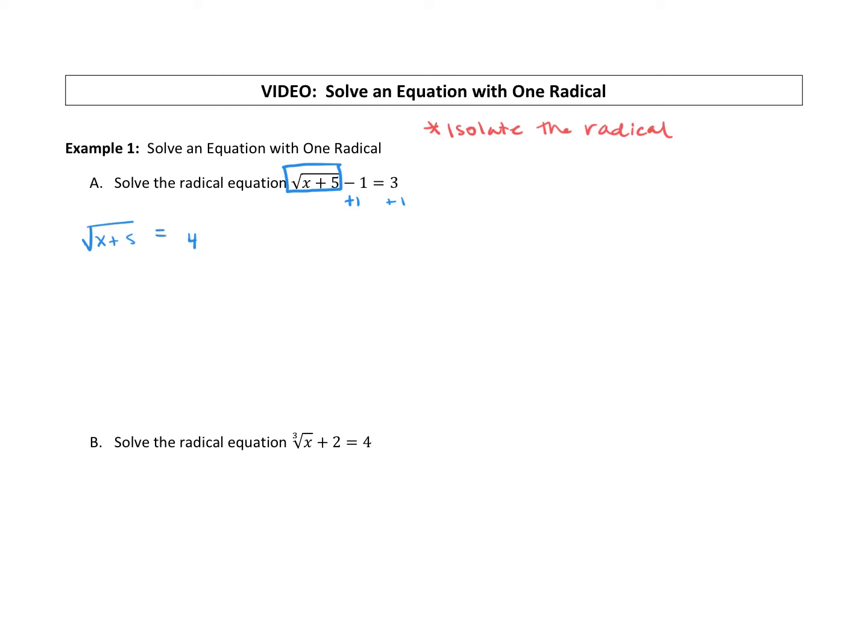Once you have isolated your radical, now we're going to undo the radical. So square rooting, the opposite of taking a root is going to raise it to a power. A square root, we can square both sides. That's the opposite operation of taking a square root. So that will eliminate our radical. It does not change what's underneath the radical at all. It just will get rid of the radical.